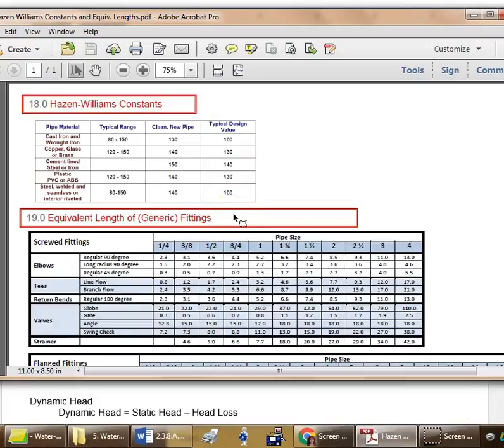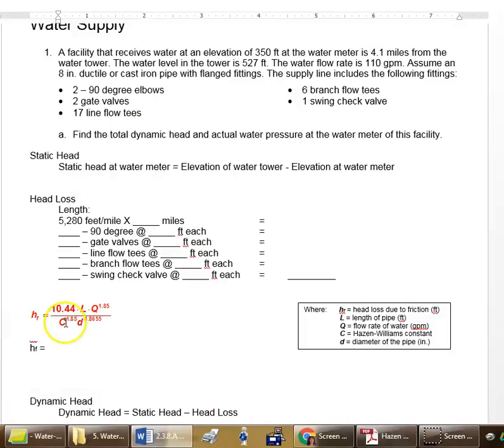What kind of pipe do we have? It's cast iron. So you should be using the typical design value for cast iron and plug it in for C here. Then your diameter here is your diameter in inches, so you're going to look it up from right there. Plug those all in. Be sure you put the bottom in parentheses when you put it in your calculator to find your head loss hf.